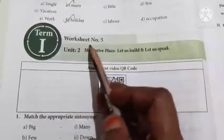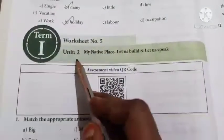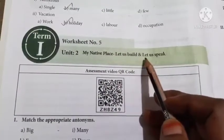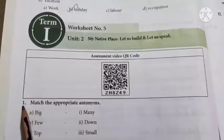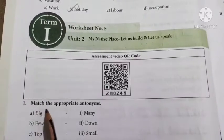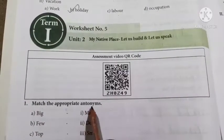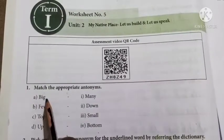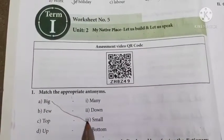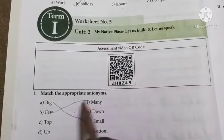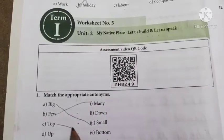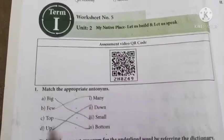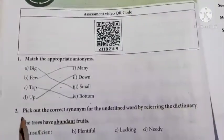Worksheet No. 5, Unit 2 — My Native Place. Let us build and let us speak. First one: Match the appropriate antonyms — opposite words. Big: Small. Few: Many. Top: Bottom. Up: Down.